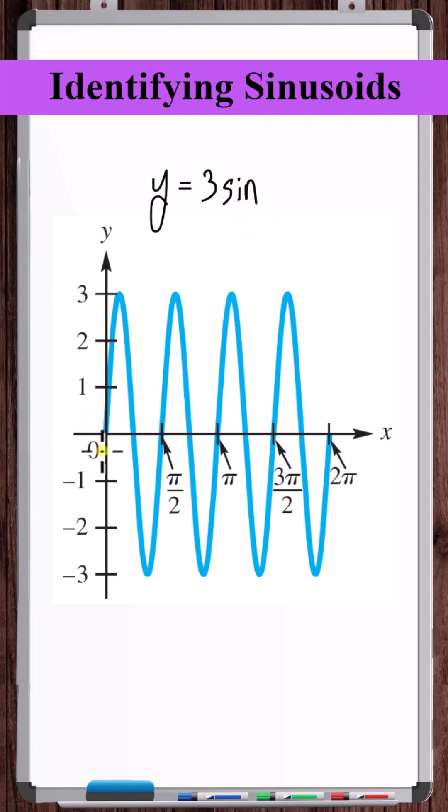We can also see that this sine function completes a full cycle after going pi over 2 in the x. So the period here is pi over 2.